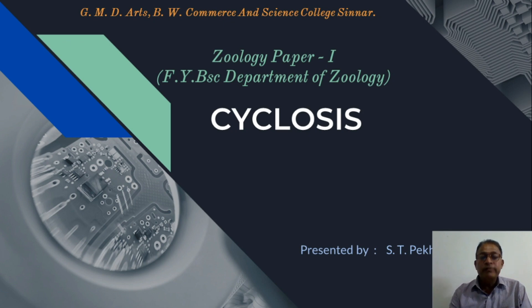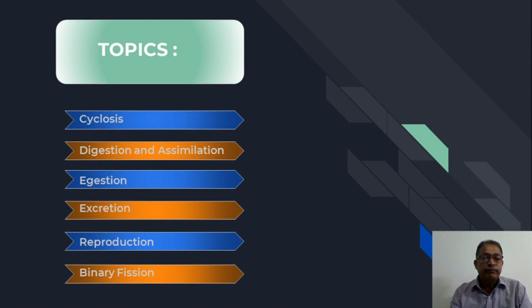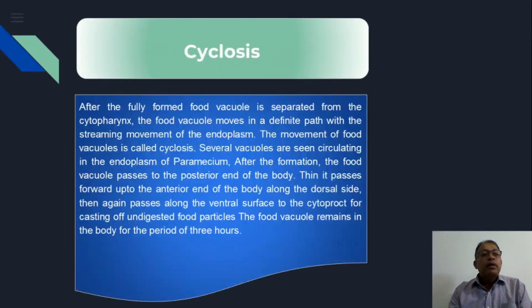Now observe this process called cyclosis. In this topic we deal with cyclosis, digestion and assimilation, the process of egestion, excretion, reproduction, and binary fission. We will first concentrate on the process of cyclosis.